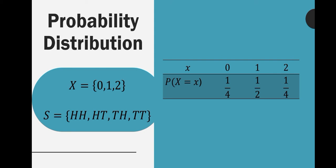The second value is one — the value of the random variable one. What is the probability that exactly one tail will occur? We count the number of elements that contain only one tail, and that is the second and third outcomes. In other words, there are two out of four, and if we simplify two out of four, that will be one half. So that is why we have one half there.